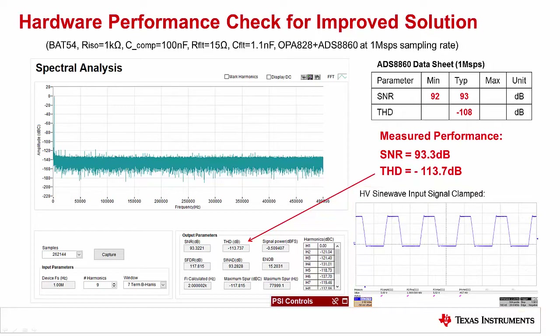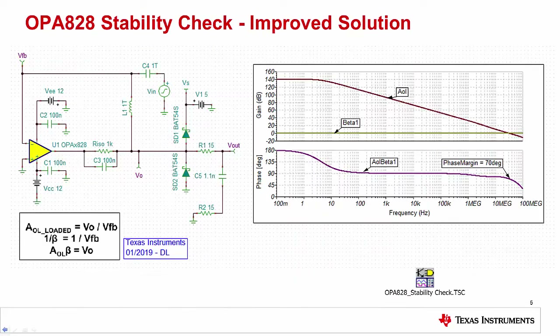In general, you should use the improved solution as shown in this video. However, some amplifiers do not provide access to the feedback loop. For example, in the case of an instrumentation amplifier, the feedback resistors are inside the device and you do not have access to them, so the original method must be used. The improved solution is a good way to improve system performance as well as the current limiting protection for fault conditions.